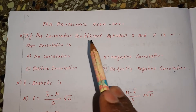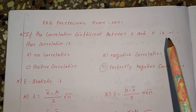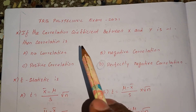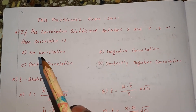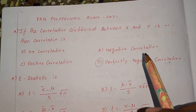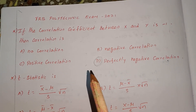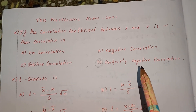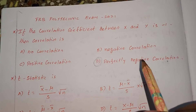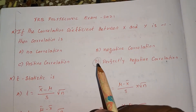If the correlation coefficient between x and y is minus 1, then correlation is: option A, no correlation; option B, negative correlation; option C, positive correlation; option D, perfectly negative correlation. The answer is option D.